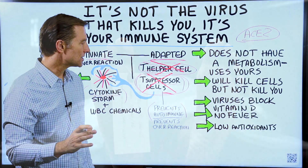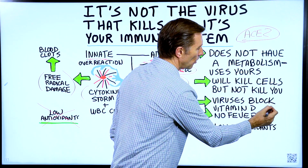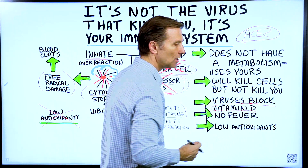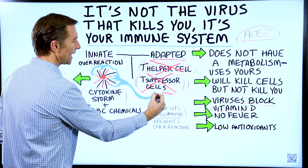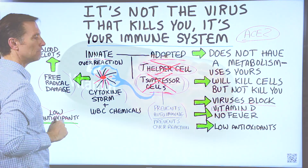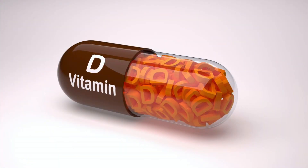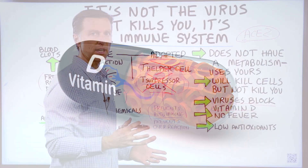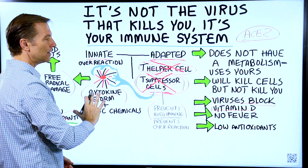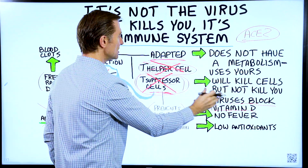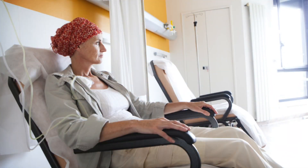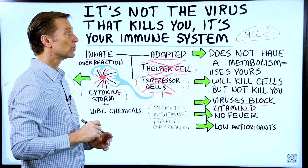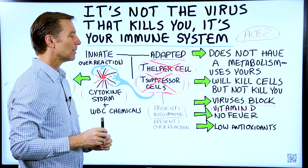Other strategies viruses use will block your vitamin D levels. If you don't have enough vitamin D, these T suppressor cells can't work and you can't put out the fire. This is why vitamin D is very anti-inflammatory. Not having enough vitamin D, certain viruses, or having a pre-existing health issue can all create this imbalance. Put all these things together, and you're really at risk.